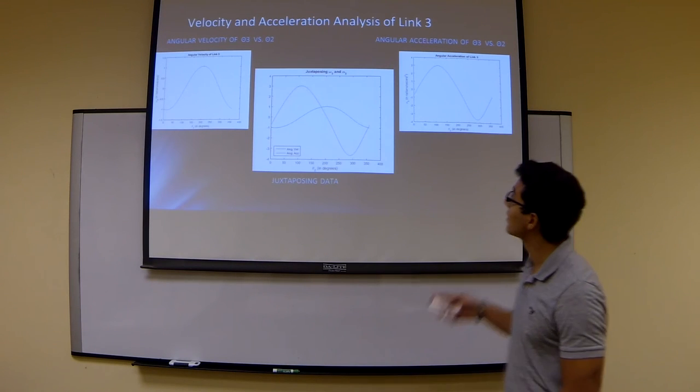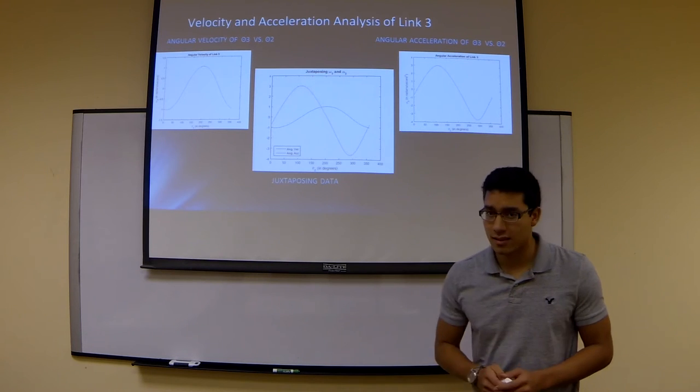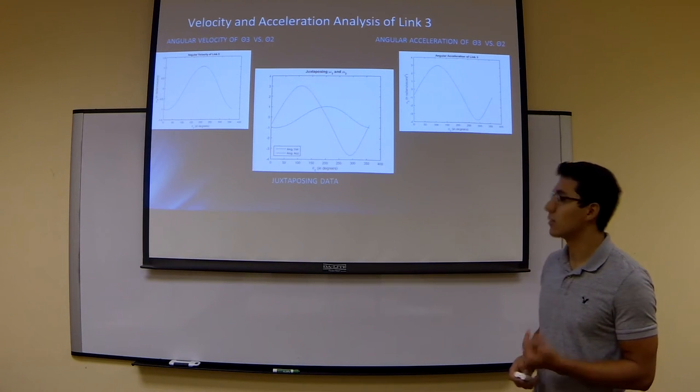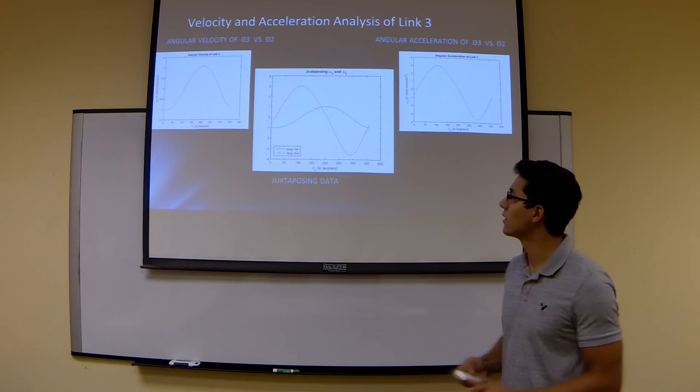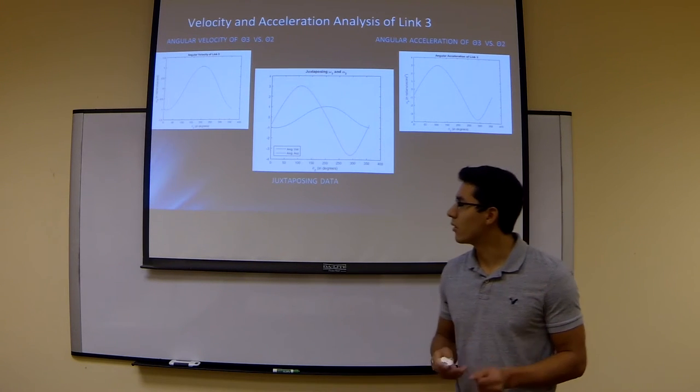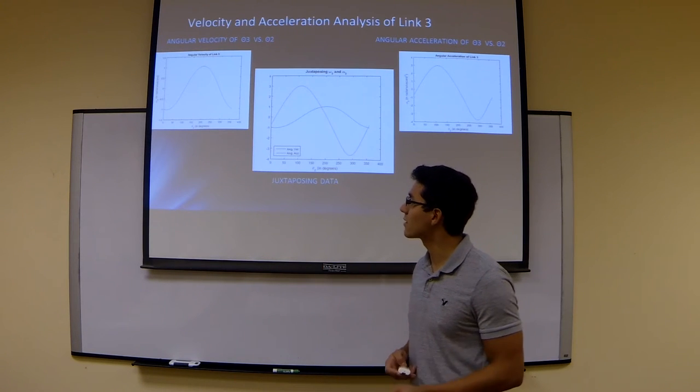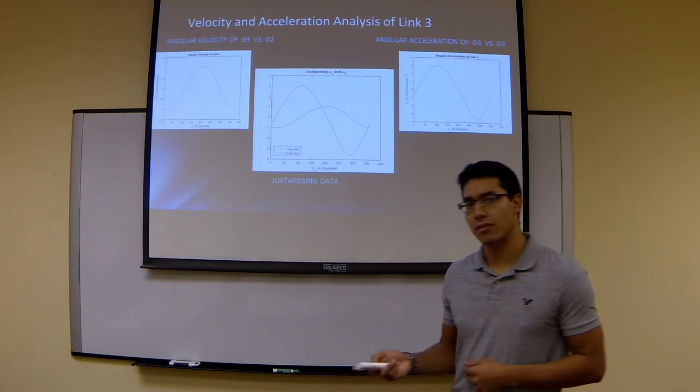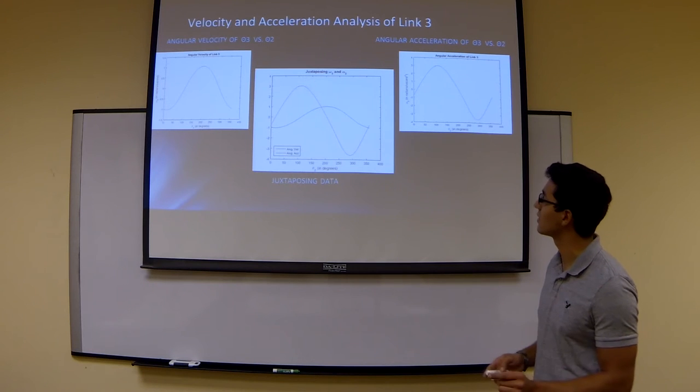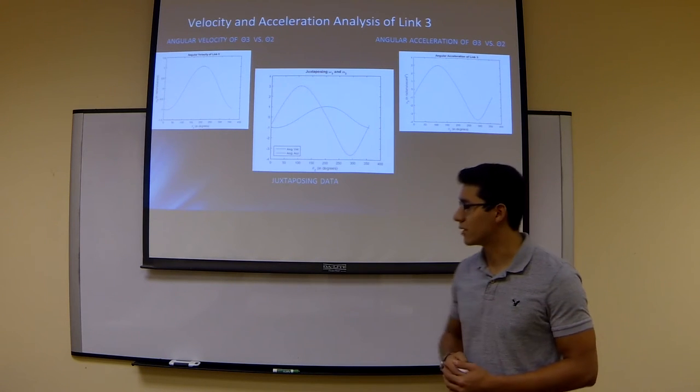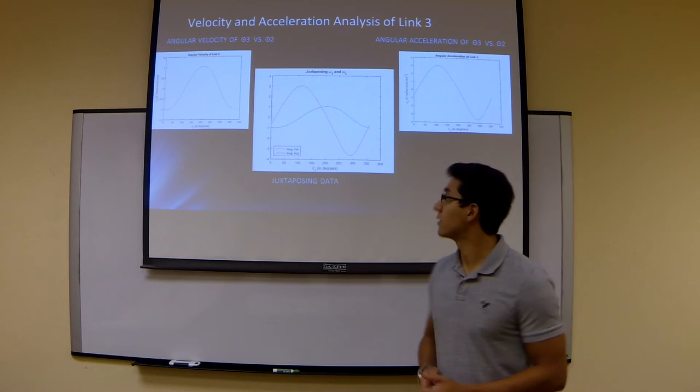When taking a look at the velocity acceleration analysis of link 3, we can see the angular velocity plot on the left-hand side, and the angular acceleration on the right-hand side. We managed to put both plots together on one just to have a reassuring idea of how both of these plots affect each other. So the angular velocity, you can see you can find a max at around 200 degrees of the theta 2 displacement. And also on the angular acceleration, you can see at that same point, you have zero angular acceleration. This is just done in order to reassure us that the data we've obtained is solid data.